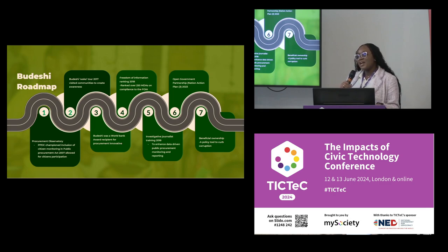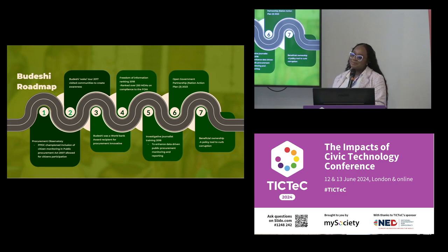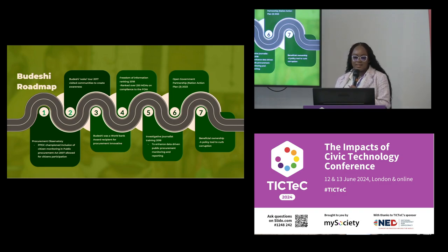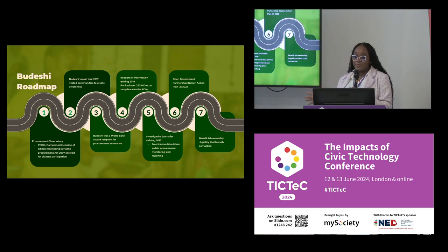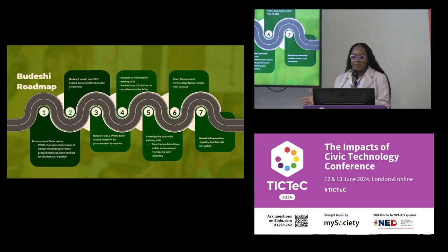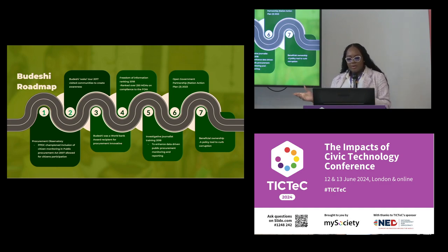I recall one of our journalists who investigated a contract that was not completed — the contractor tried to bribe the journalist with about two thousand dollars to drop the story. These things make me realize that when people say Nigeria is a poor country, we're not really poor. Just a few days ago, the Vice President's villa was unveiled and commissioned for over one billion naira — roughly six hundred thousand dollars — just for somebody's house, while dilapidated health facilities and schools are littered across Nigeria.